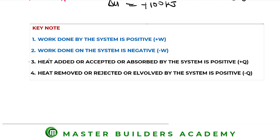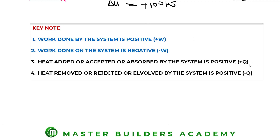Key note three: in any system, heat can either be accepted or rejected. When heat is added, accepted, absorbed, or received by the system, it is taken as positive. These phrases all mean the same thing — the system is gaining heat — so such heat is always assigned a positive value.